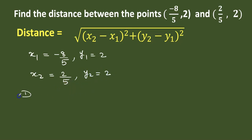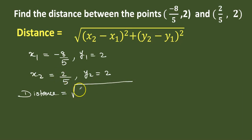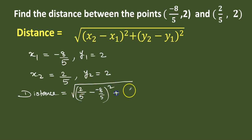Therefore, distance is equal to square root of x2 minus x1, which is 2 by 5 minus minus 8 by 5, the whole square, plus y2 minus y1, that is 2 minus 2, the whole square.